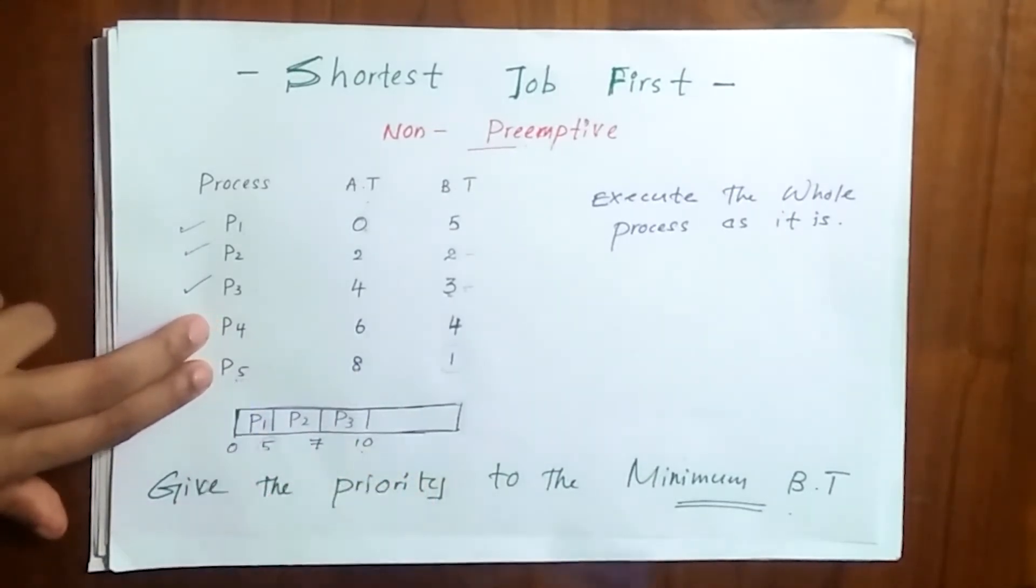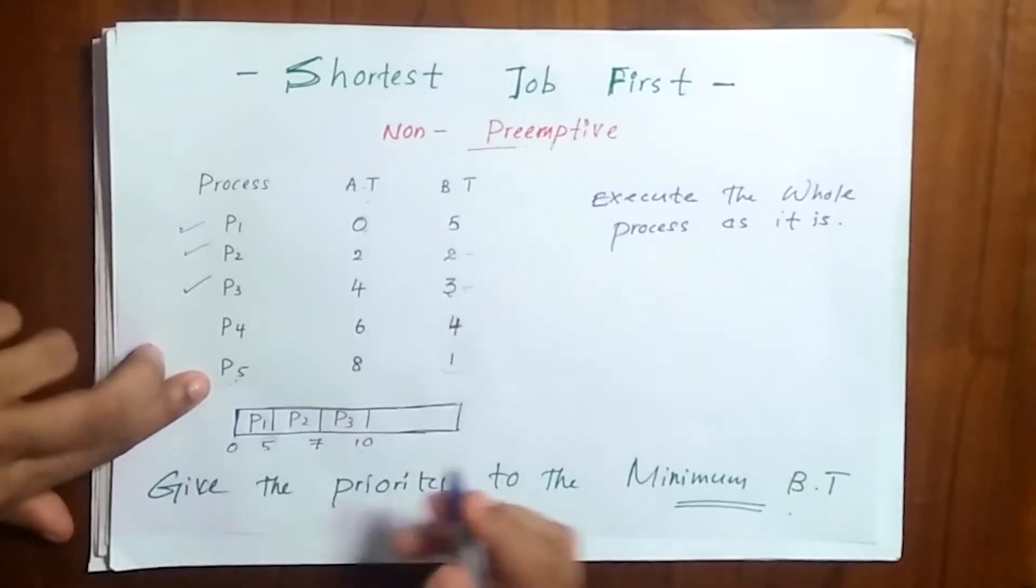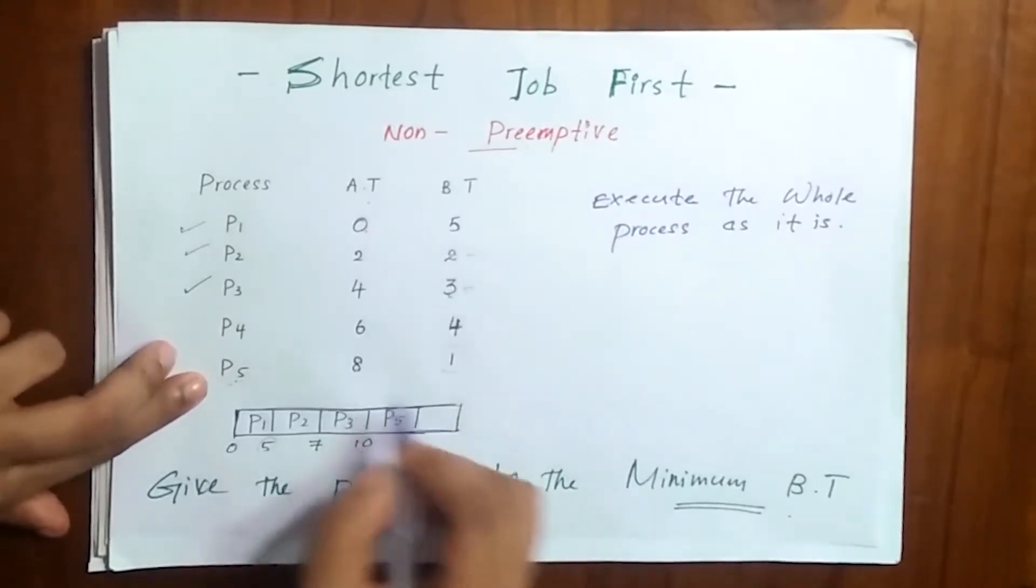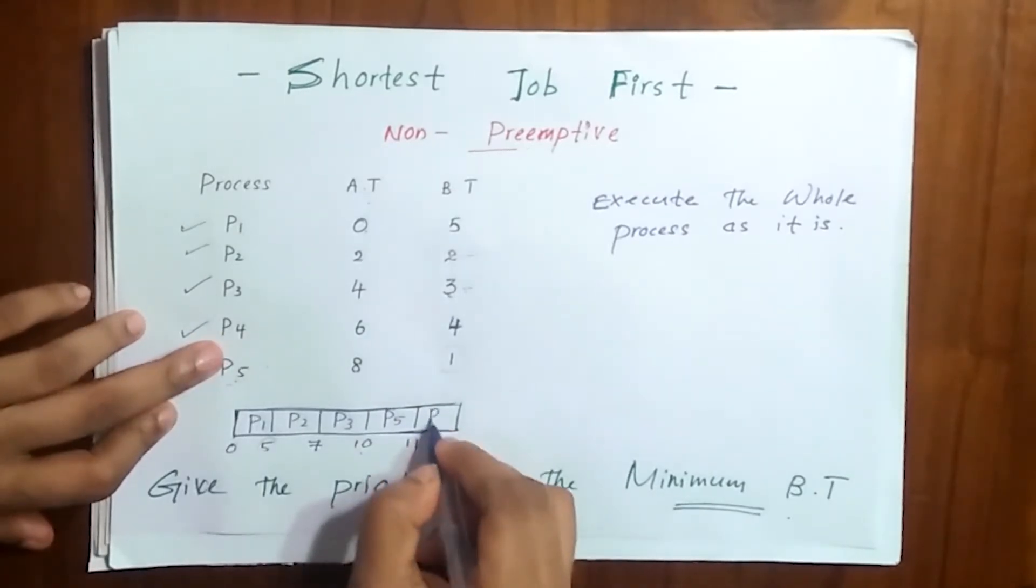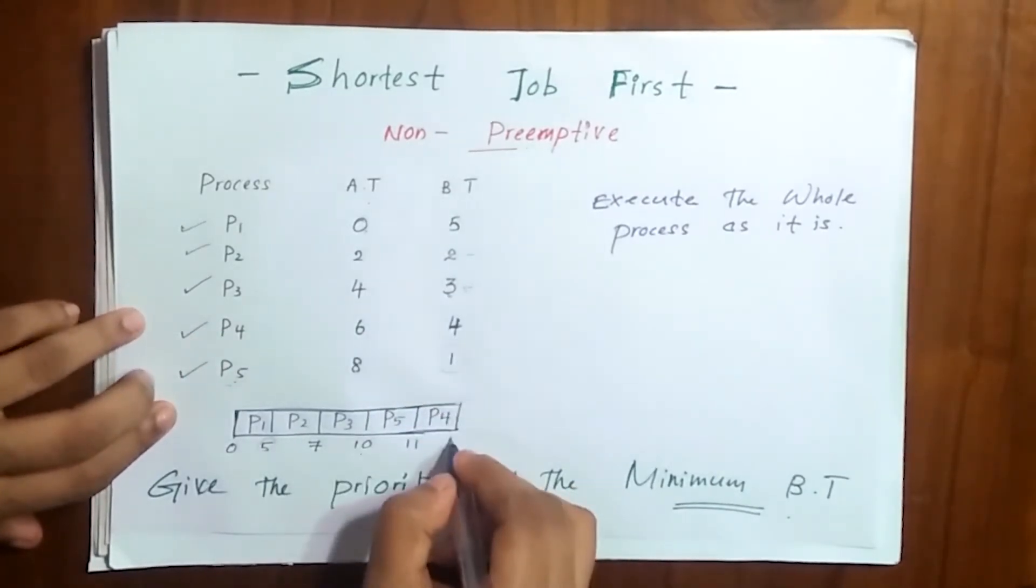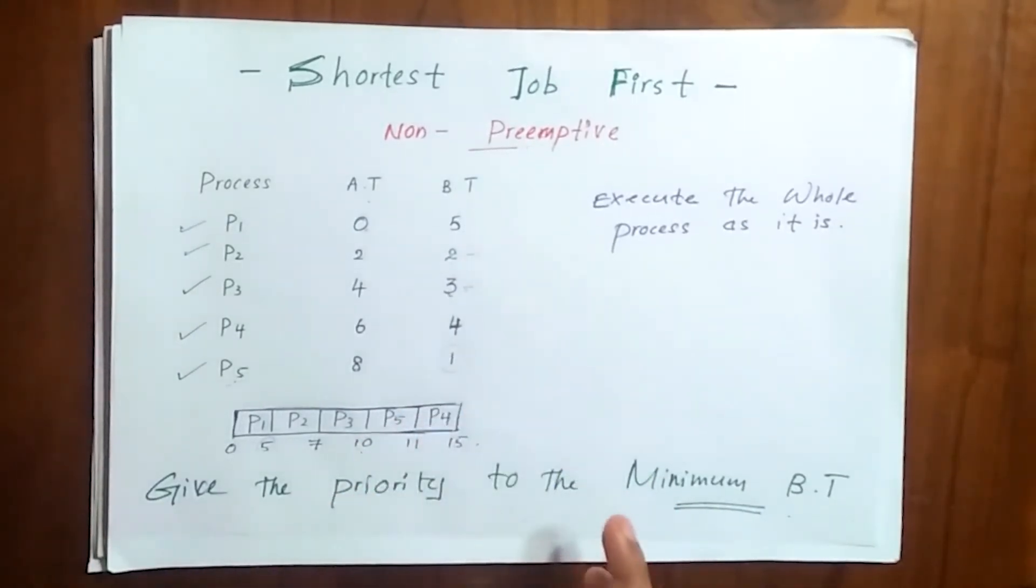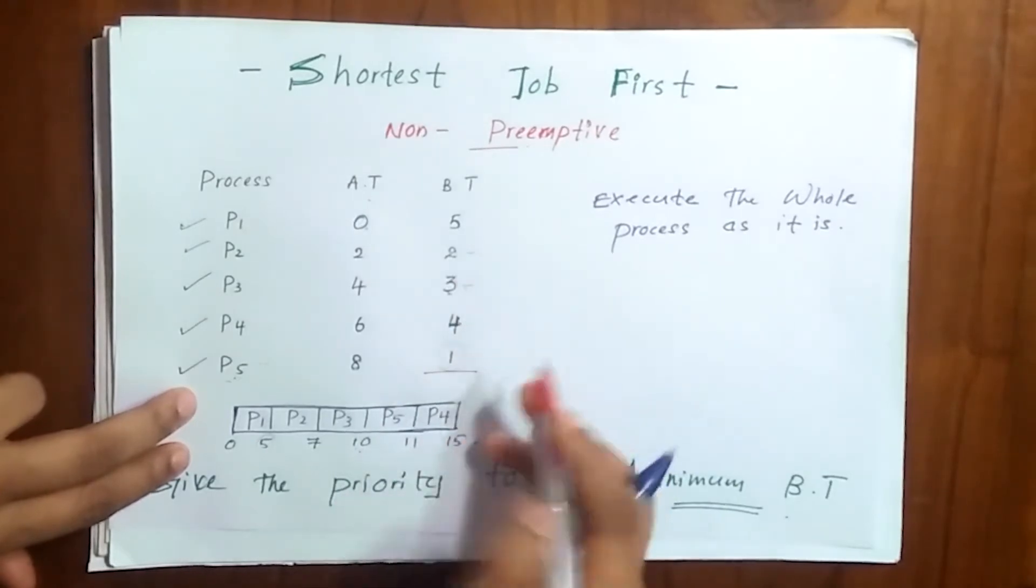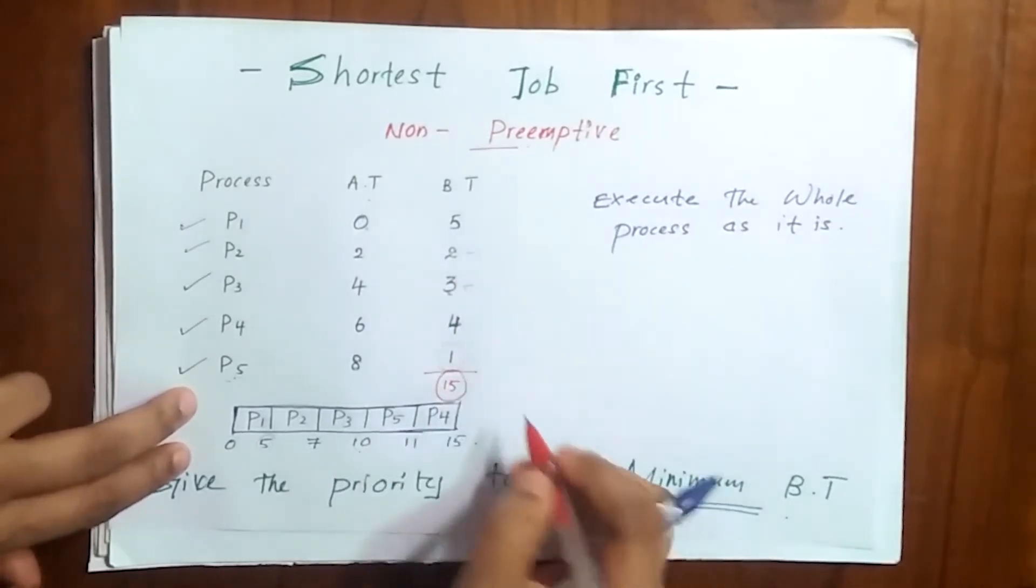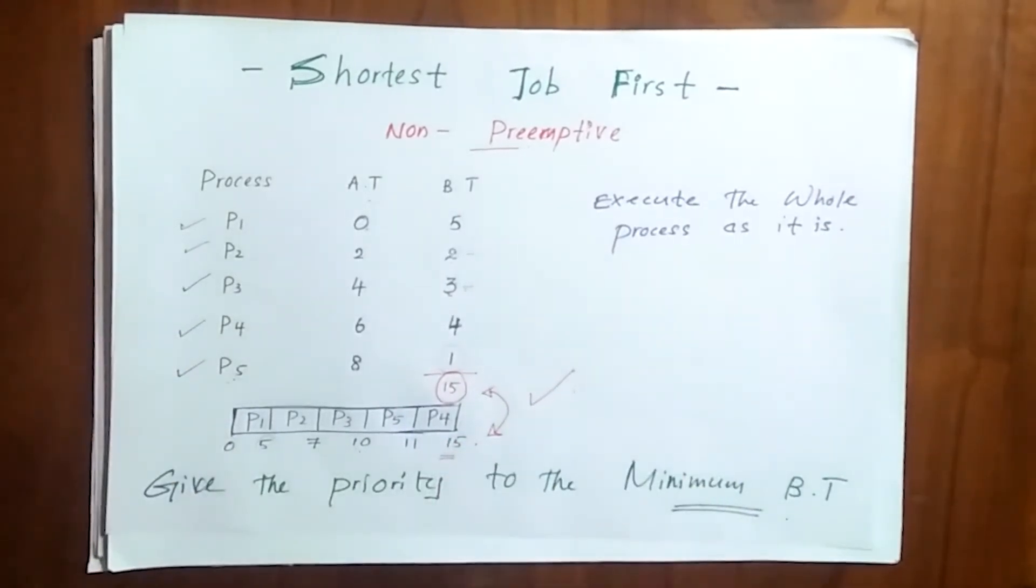So even though P4 arrives before P5, we have to select the minimum burst time, so it becomes P5 and it is 1, so it becomes 11. Finally P4, it is 4, so the total is 15. Now let's check the total of the burst time here: it is 5, 10, 14, and 15. Here also 15, so without any doubt we can say that our Gantt chart is correct.